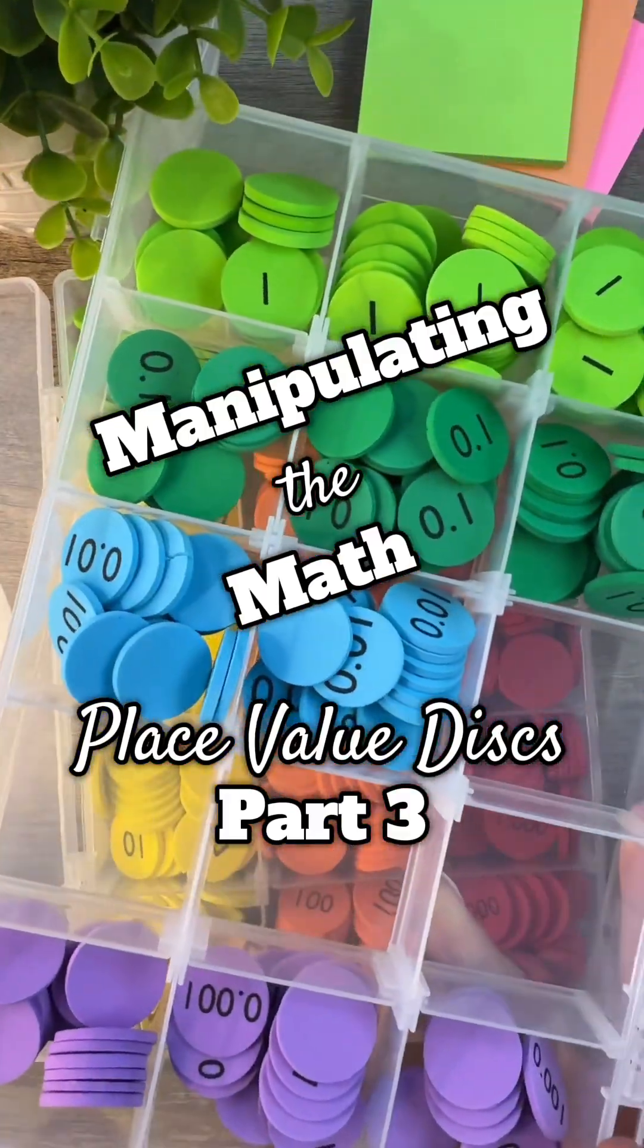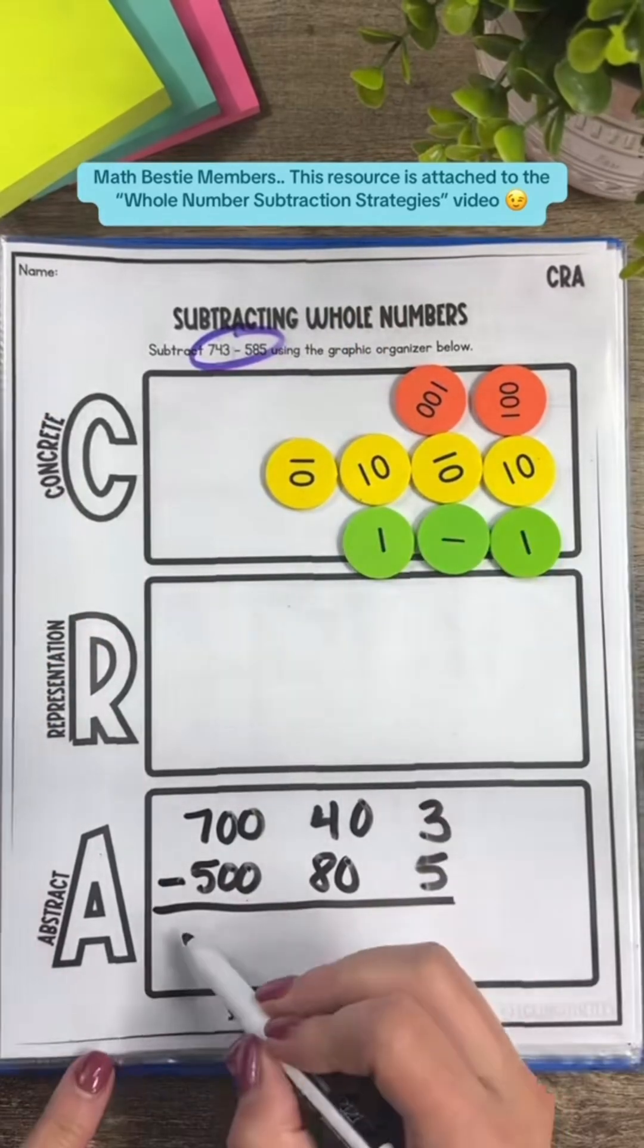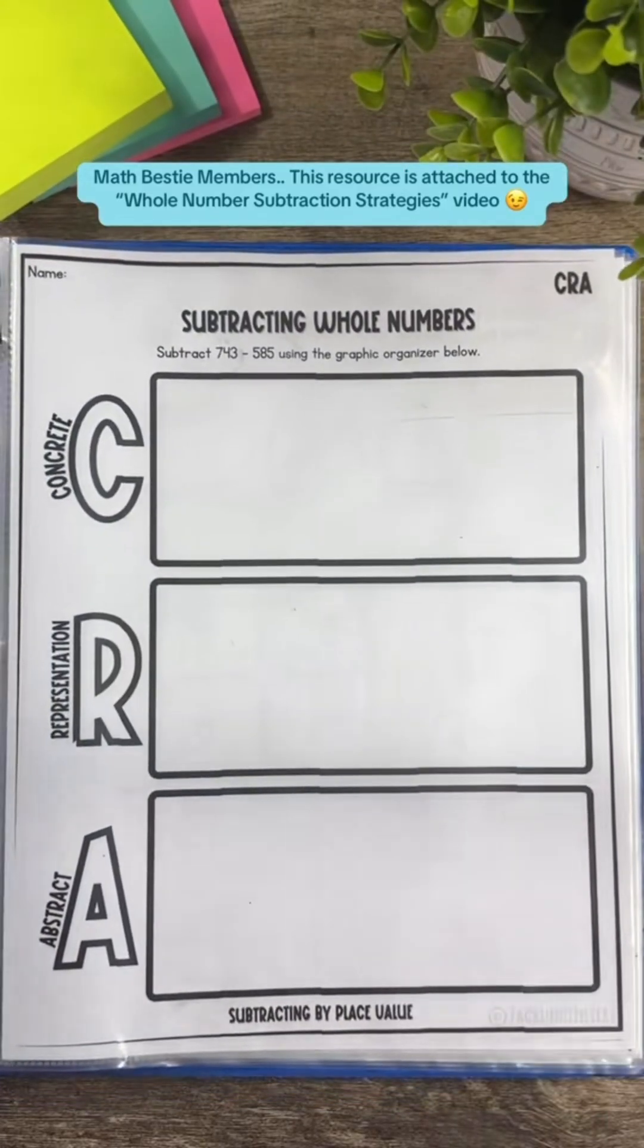Welcome to part three of manipulating the math with place value chips. Let's take a look at modeling three different kinds of subtraction strategies and all of these strategies keep place value in mind.